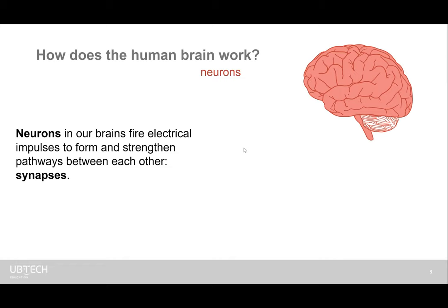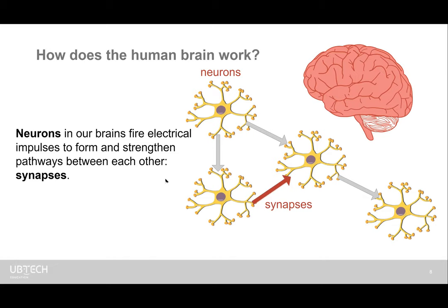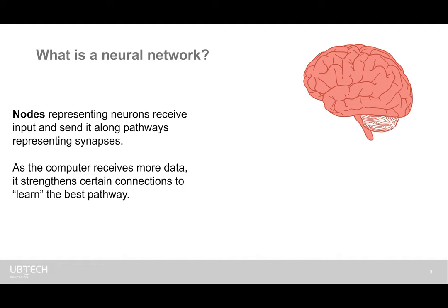A computer tries to mimic the neurons in our brain and these synapses—we call this a neural network. At a basic high level, a neural network tries to recreate neurons, which we call nodes. Those nodes receive an input. We have to feed lots and lots of data into those nodes to create pathways that represent the synapses, and those connections are learning the best pathway.